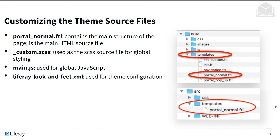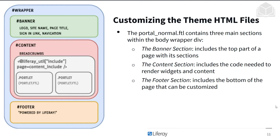We'll be customizing the theme HTML files most often to change how a widget looks or the location of a default element. Portal Normal FTL contains three main sections within the body wrapper div. The banner section at the top includes things like the logo, navigation, sign-in link, page title, and site name. The content section in the middle includes code needed to render widgets and content, with FreeMarker includes for widgets. The footer section at the bottom is the page signature — it says 'Powered by Liferay' by default, but you can change that.